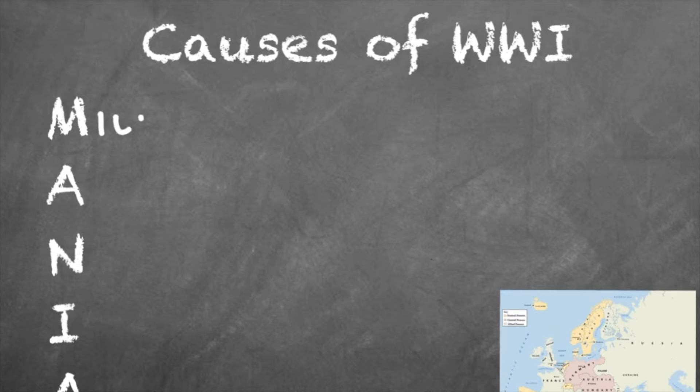MANIA stands for Militarism, Alliances, Nationalism, Imperialism, and Assassination. Just knowing the acronym isn't going to get you many points — you need to apply these concepts. For Militarism, which countries in Europe were militarizing and what were the effects? For Alliances, you need to know which countries were aligned with who — alliances change from decade to decade, so knowing the system was a cause isn't enough.